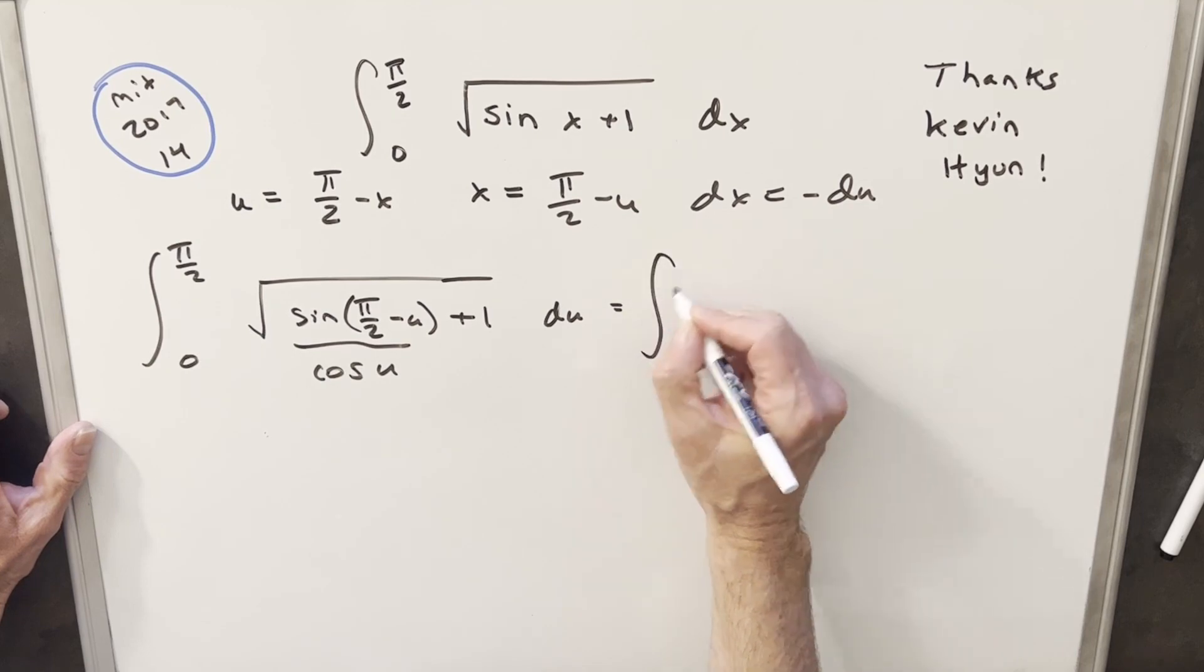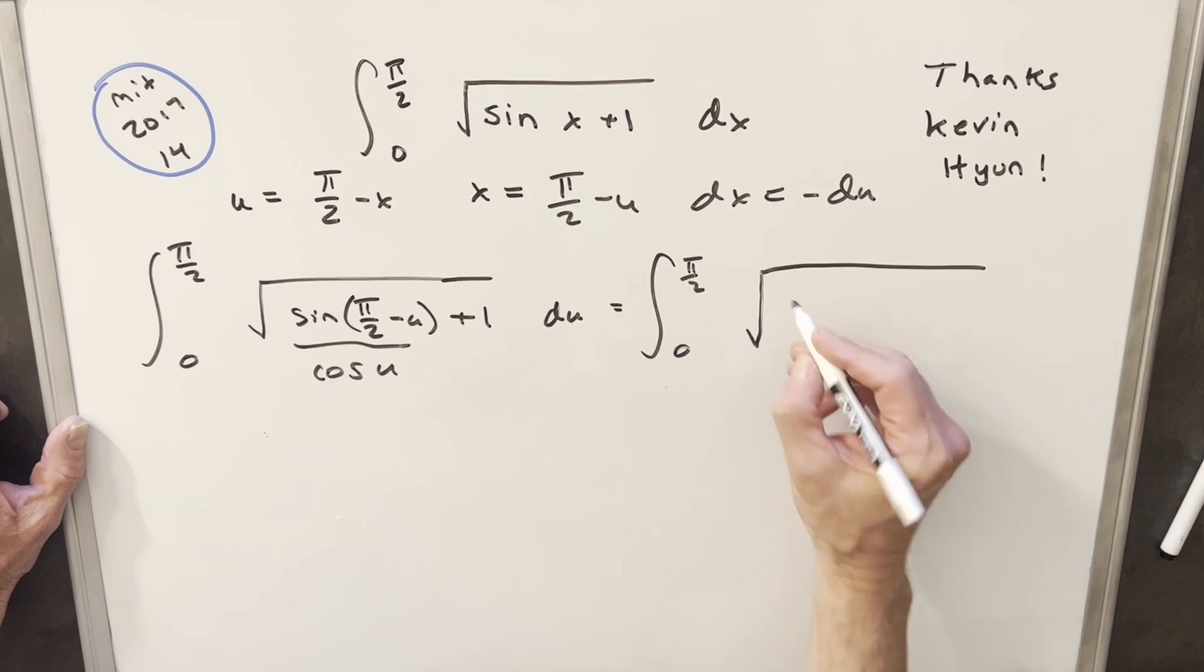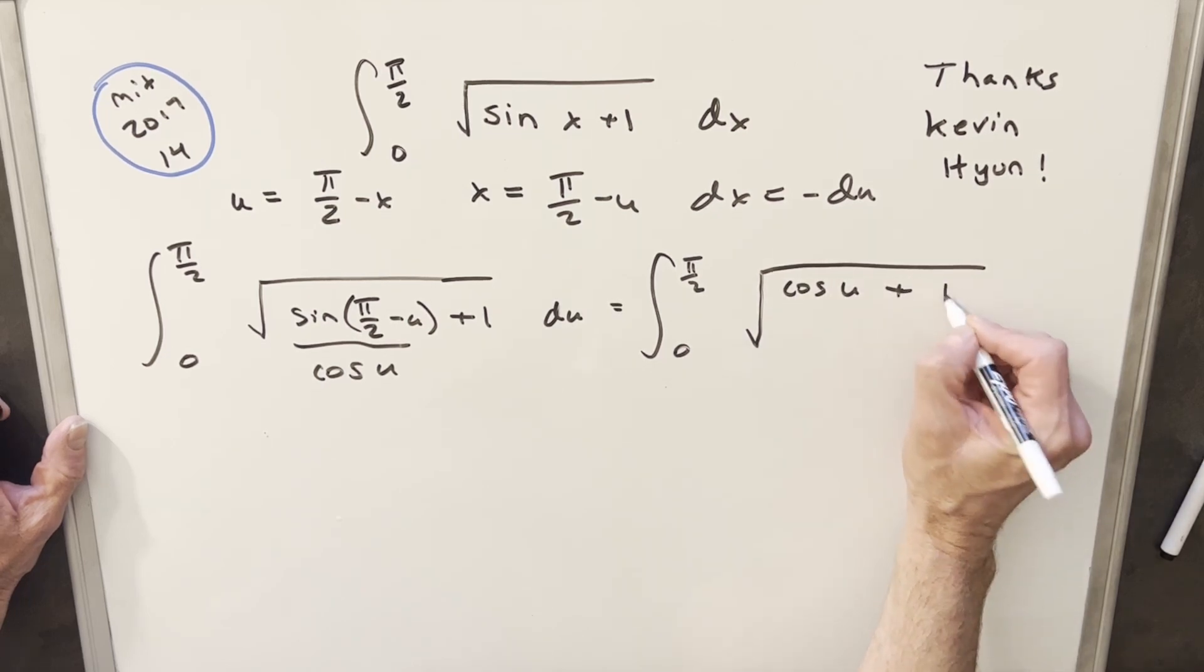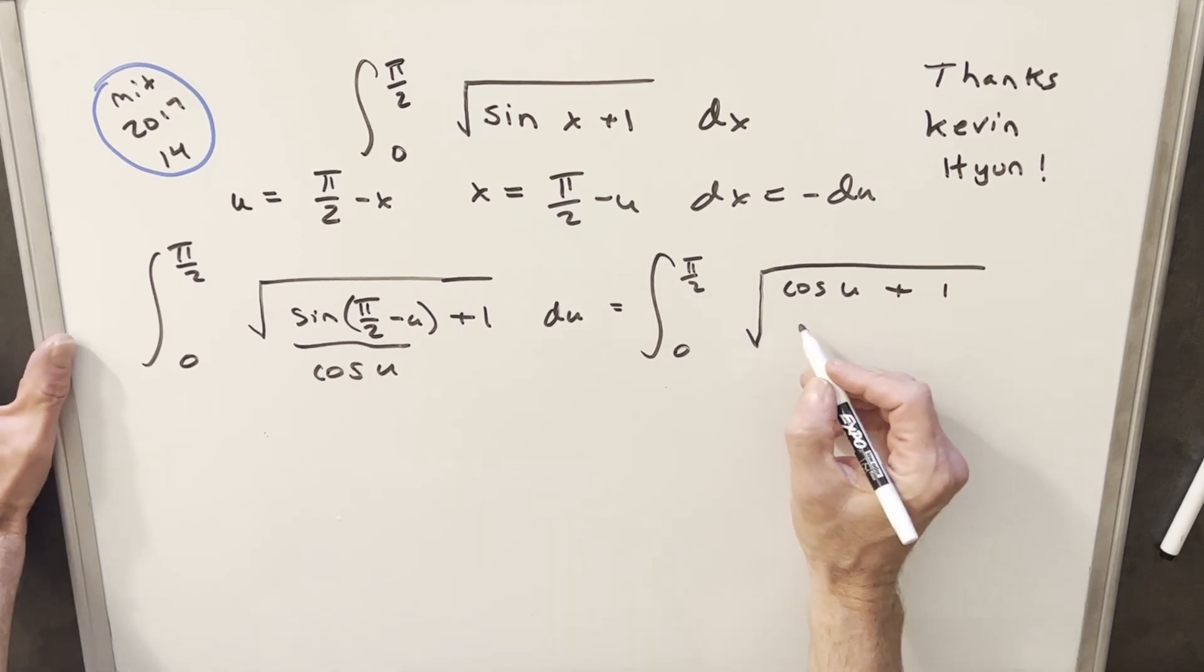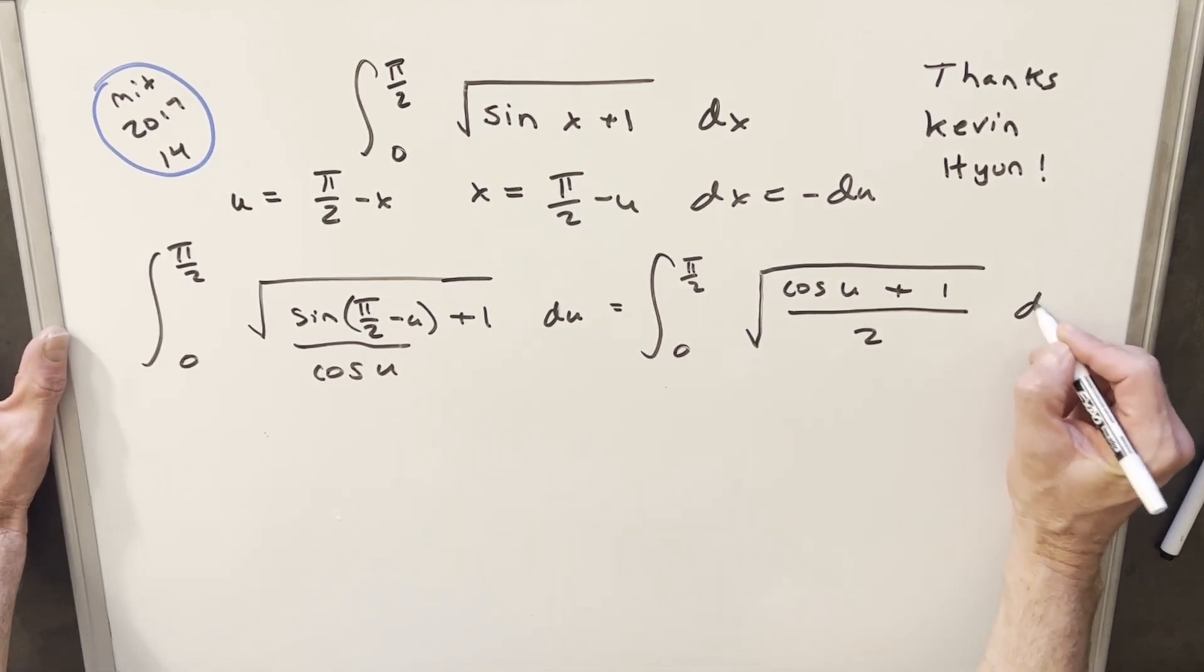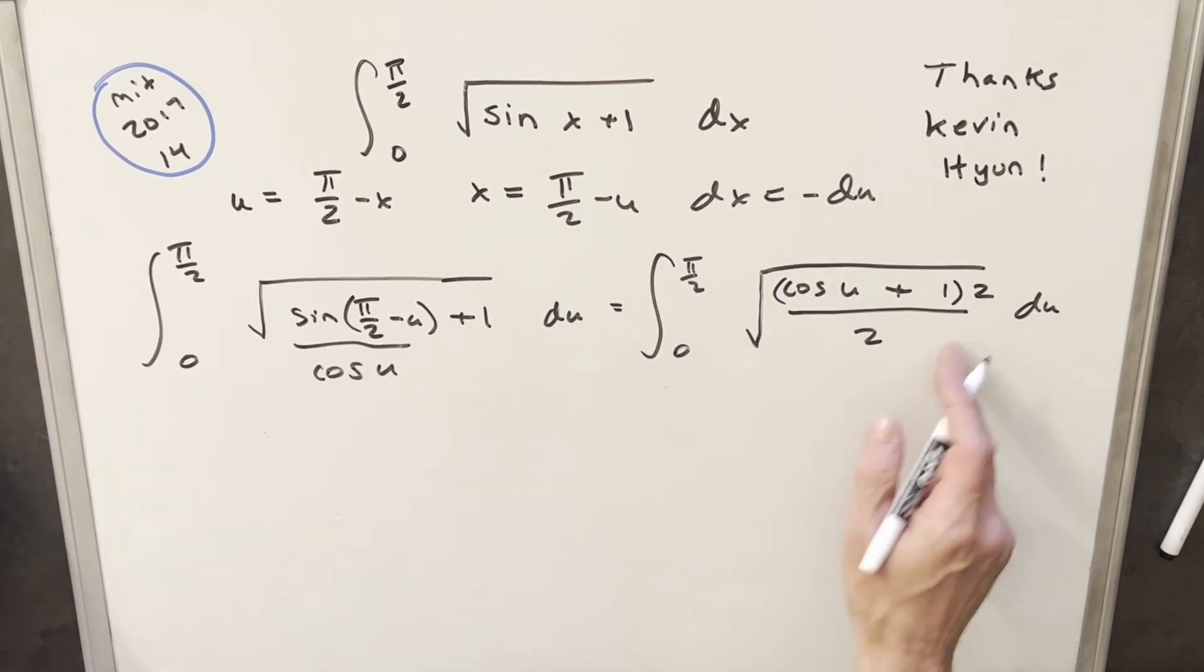And next what I'm going to do, I'm just going to rewrite this. I'm going to do a big square root sign. So we're going to have cosine u plus 1. And then what I want to do here, I'm actually going to do something a little mysterious. We'll divide by 2 here, but I'll multiply by 2 right here, so I'm not changing it. I just multiplied by 1.